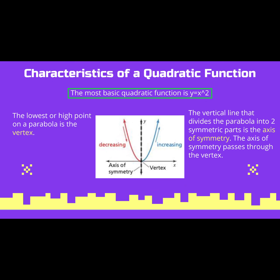A couple of characteristics of a quadratic function — this picture would be a good thing to have written down. The most basic quadratic function is y equals x squared. Does anybody remember from chapter 5 another name that we used for the most basic form of a function — not just quadratic, but any function?